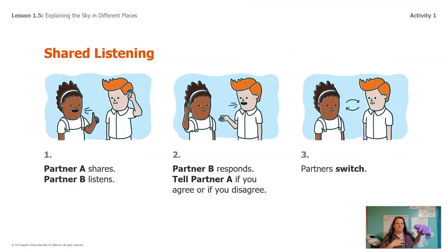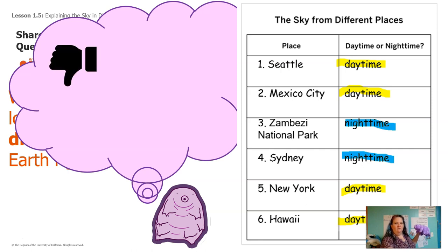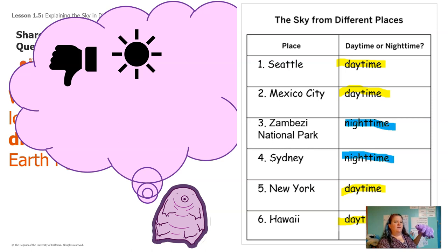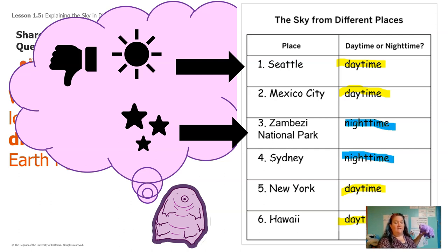Lavender listens and then she's going to respond to me, and then we're going to switch. Lavender disagrees with me — she must think that it's not daytime for everybody on earth right now. She says the sun means daytime, and the sun is in Seattle. And the stars mean nighttime, and the stars are in Zambezi National Park. That's a really good point, Lavender. Do you see how Lavender is using the data from the data table to share with me that maybe my idea isn't right? If I was right, everybody should be in daytime right now, but some people have nighttime and some people have daytime. What did you guys think?